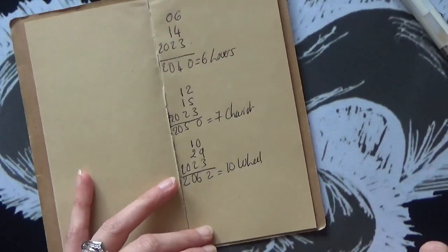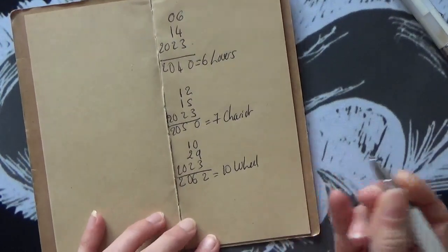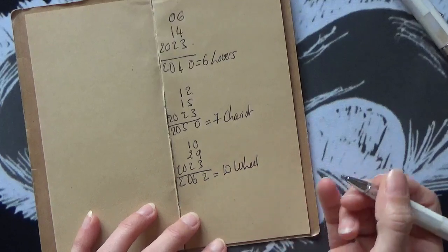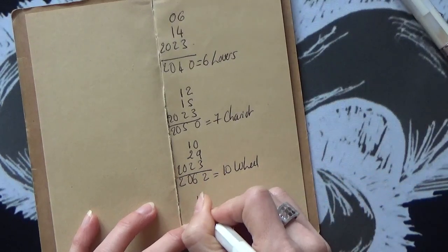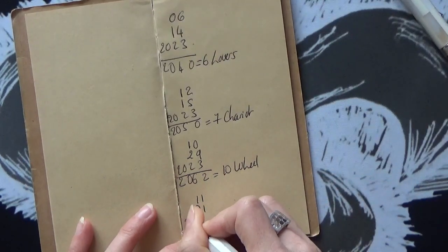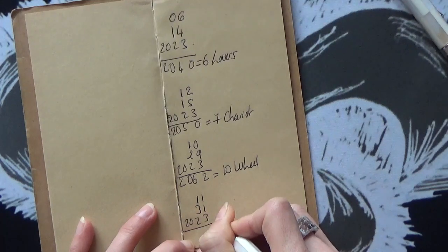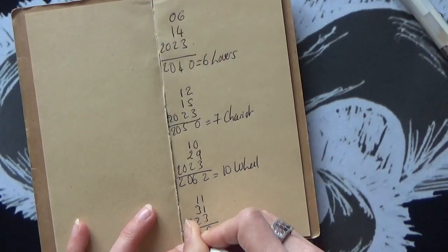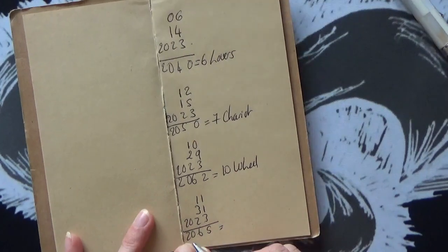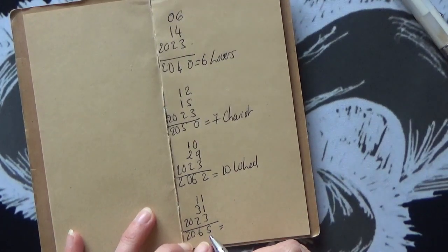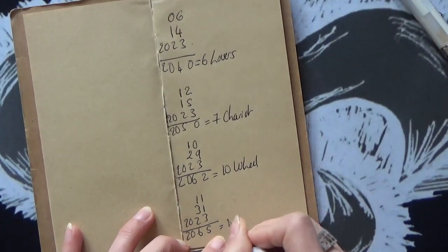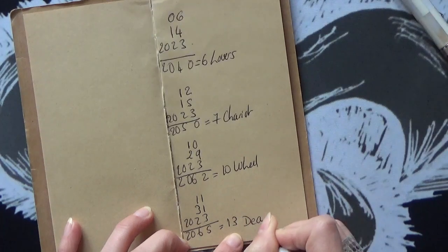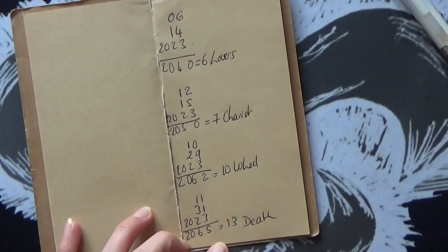I'll do one last one with you. So let's say you're born on the 31st of November, so November is 11, then you put 31st, and again 2023. That gives you 2065, so when you add up 2 and 6 is 8, 8 plus 5 is 13, and that would be the Death card.